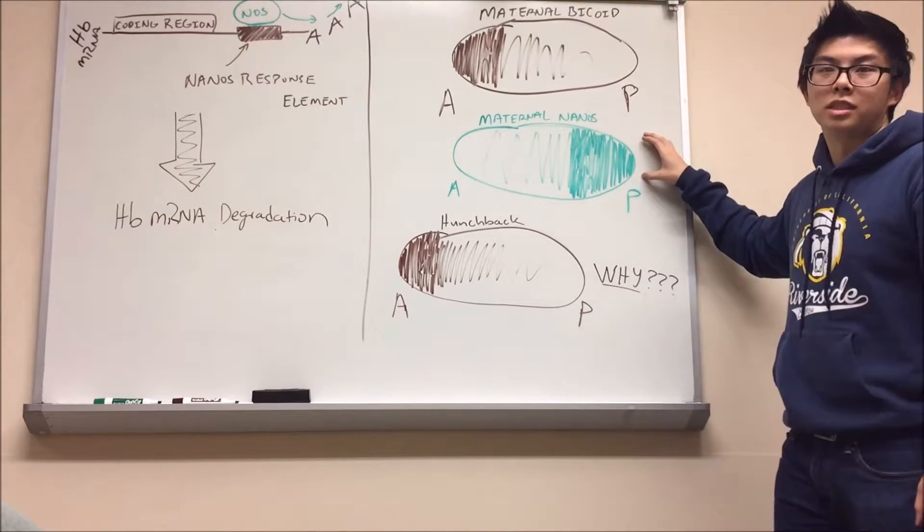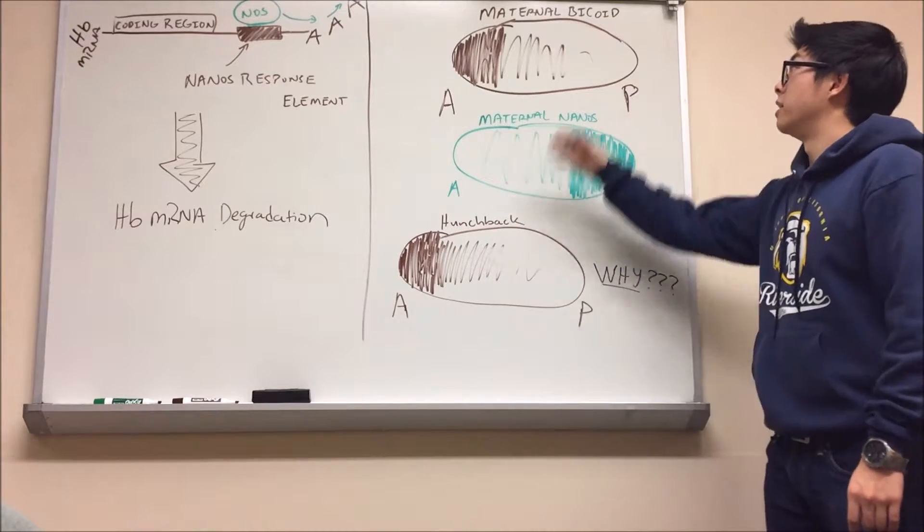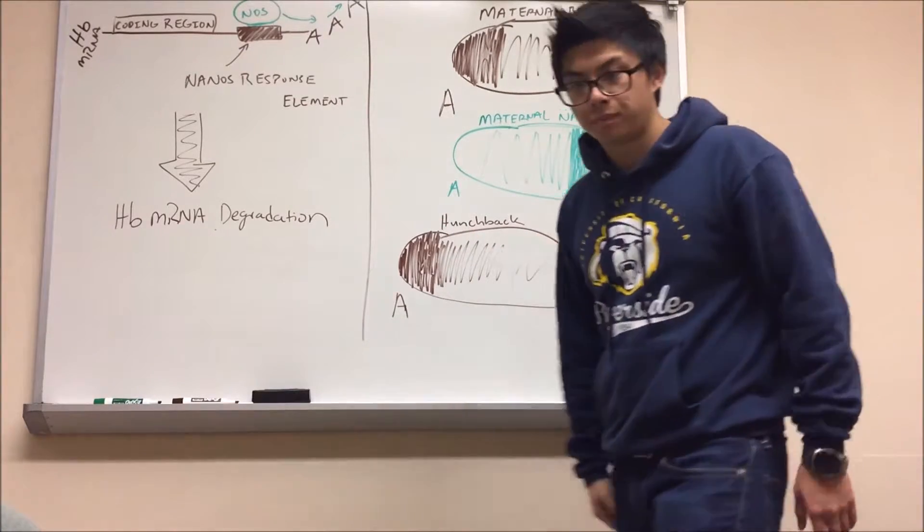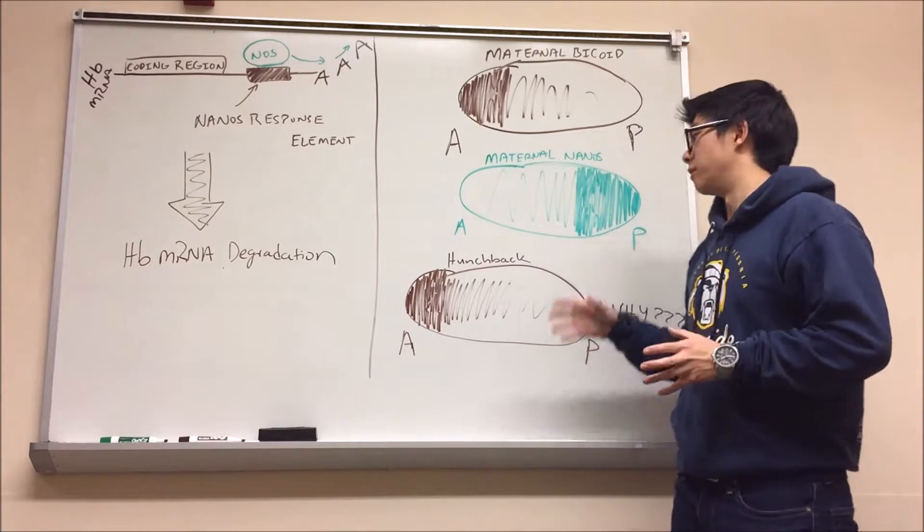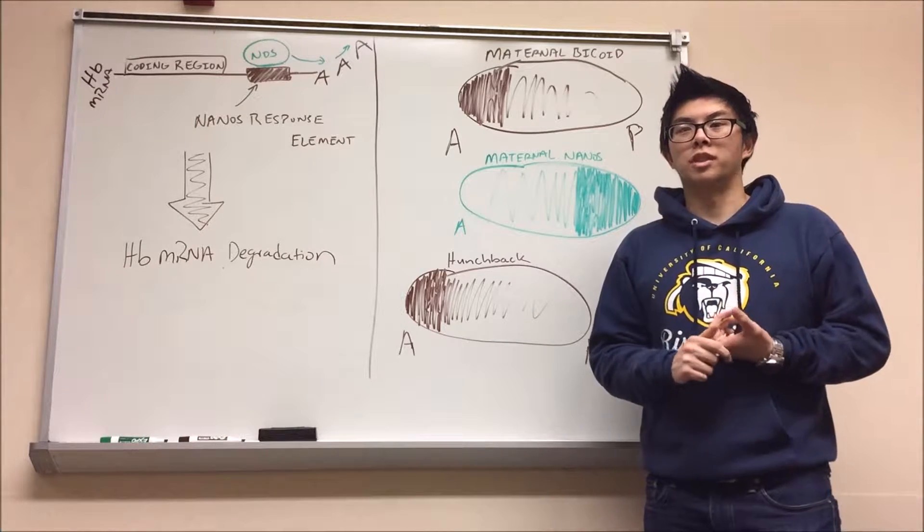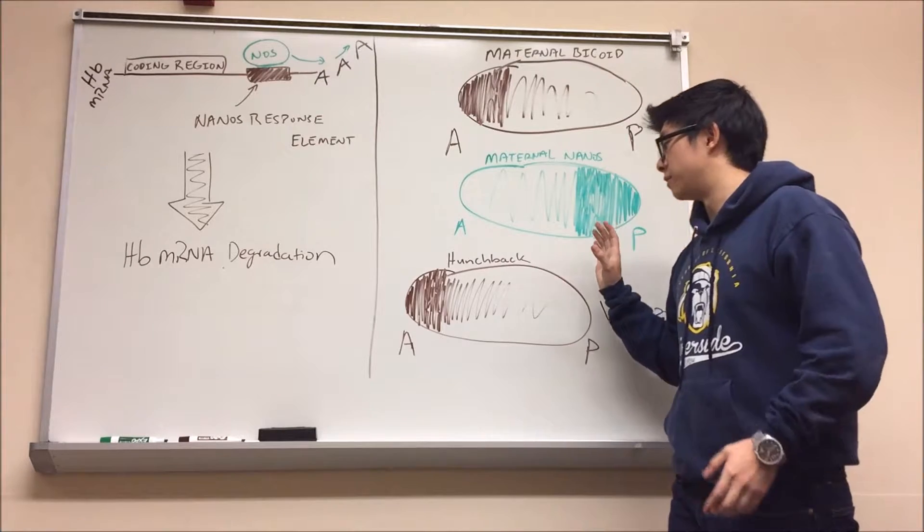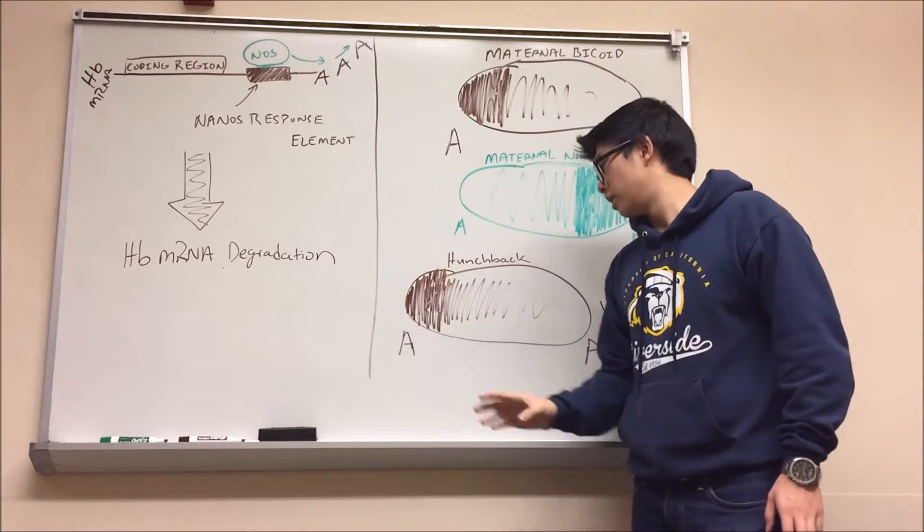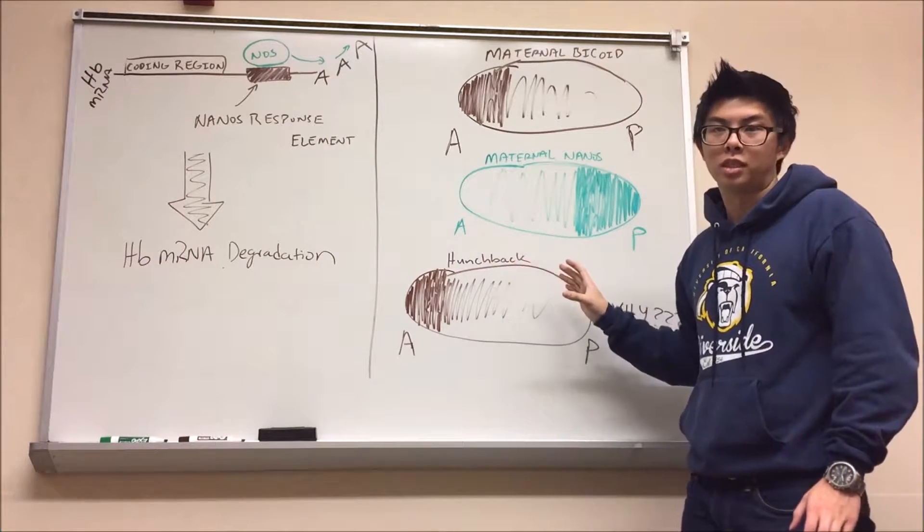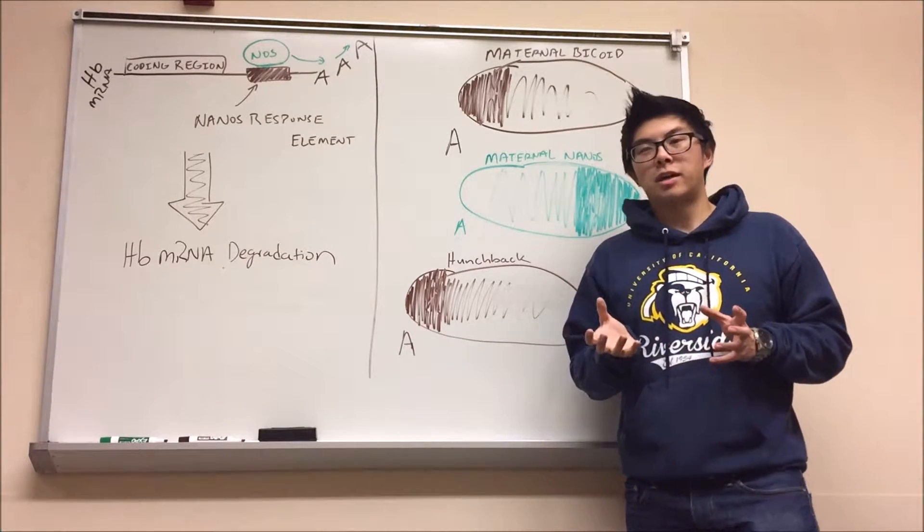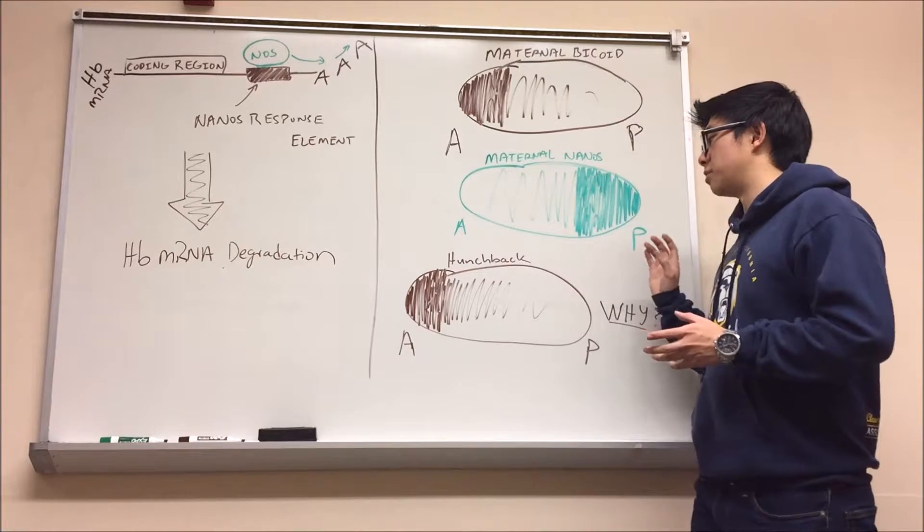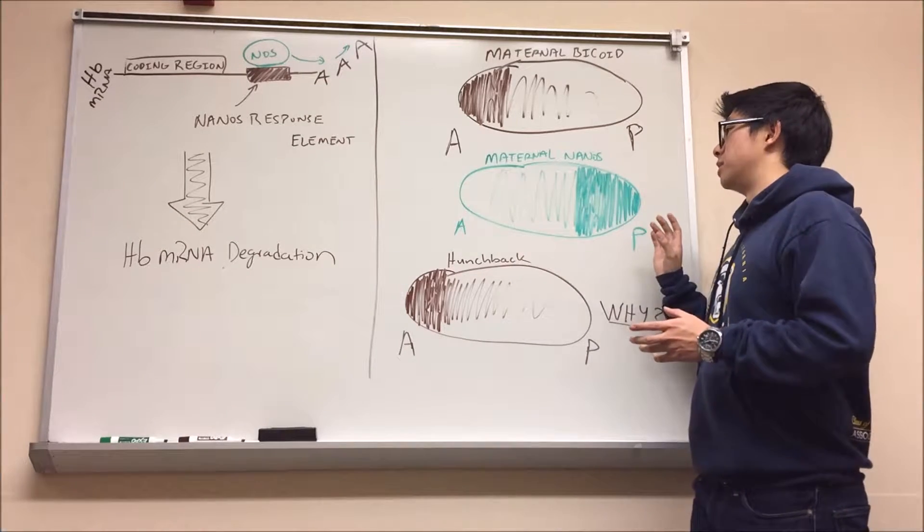And which is why? Because you see a lot of Nanos expression on the posterior end, you cannot have much Hunchback expressed there. However, at the anterior end where less Nanos is expressed, you have activation of Hunchback via maternal Bicoid and from there, you have this anterior to posterior gradient of Hunchback protein. In this sense, you can think of Nanos as a repressor of Hunchback. You can imagine that if you had Nanos that became mutated or Nanos just wasn't there, it was never deposited by the mother, then instead of seeing Hunchback in a gradient where it's most prominent at the anterior end, you would see uniform distribution of Hunchback mRNA, ultimately leading to Hunchback protein in the embryo. Something that's really peculiar that happens, you don't necessarily need this maternal Hunchback. If you eliminate Nanos and you do not have this Hunchback protein, the embryo ends up developing fine.